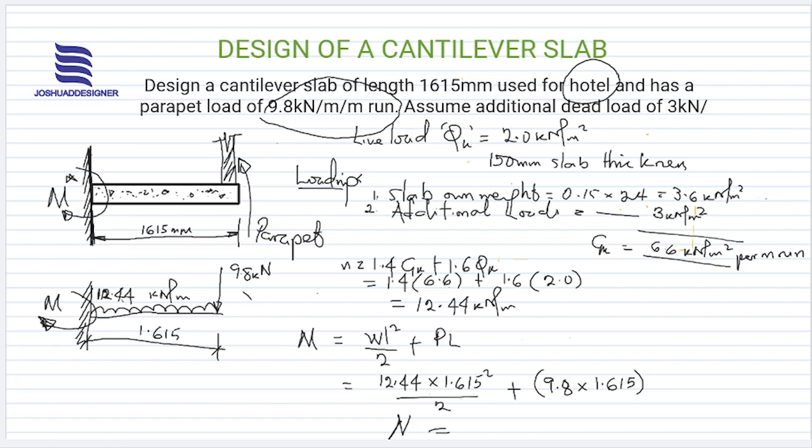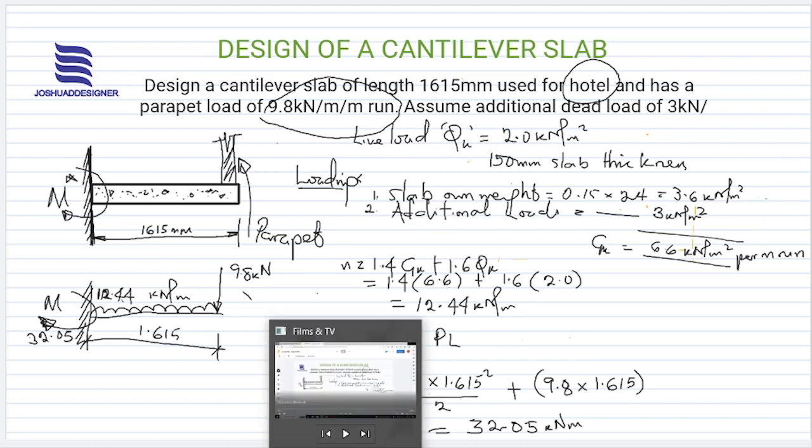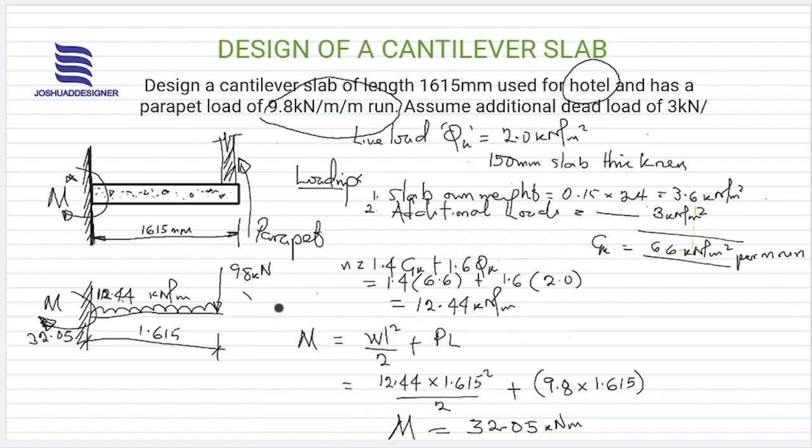If this is rightly done, the result of our moment should give 32.05 kilonewton meters. So that's the value of the moment at this point, 32.05 kilonewton meters. This is how we obtain the moment at that fixed point.